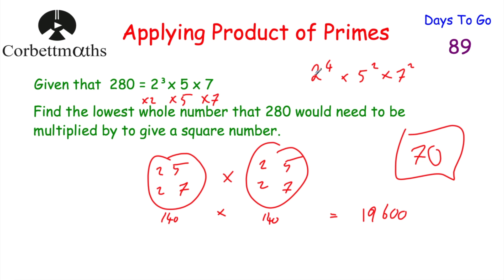The key insight is that square numbers, written as a product of primes, have all even powers — because a square is a number multiplied by itself, so the primes can be shared out equally. If the question asked for a cube number, all powers would need to be multiples of 3. In that case you'd need 5² and 7² as multipliers so that 280 becomes 2³ × 5³ × 7³. But here the answer is 70.